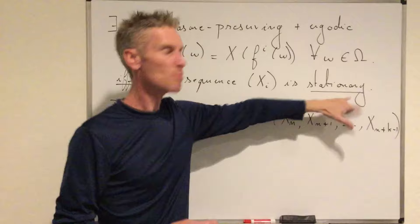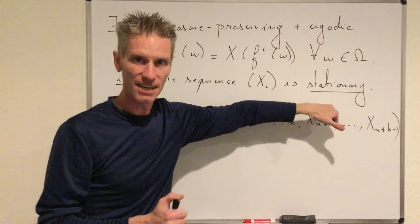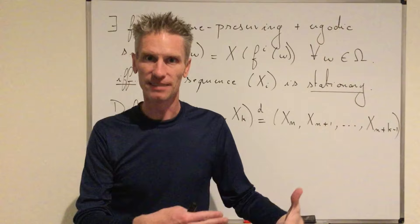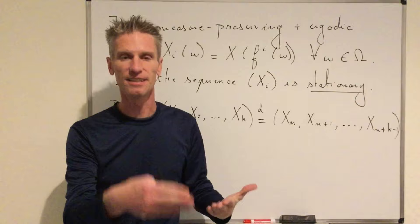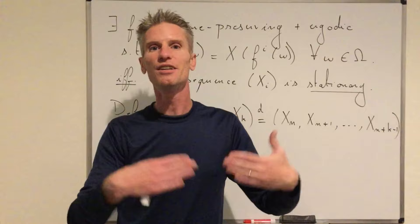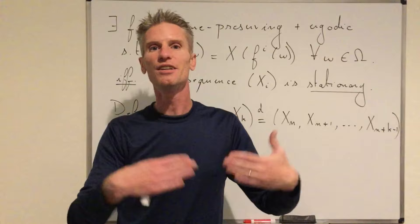However, you can prove that there are sequences of random variables that are stationary but lack independence — they are stationary but not completely independent. This shows that the assumption of the strong law of large numbers — independence and identically distributed — implies stationary, but the converse is not true. And so the Ergodic theorem shows that in fact the strong law of large numbers is still true for sequences that are only stationary, which is a weaker assumption than the actual assumption of the strong law of large numbers.